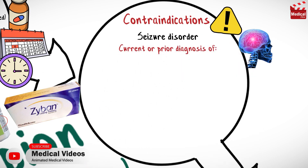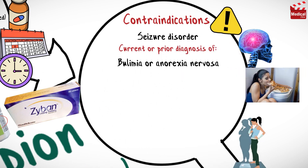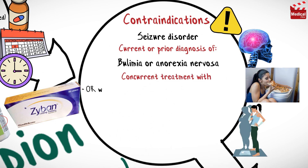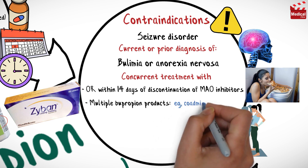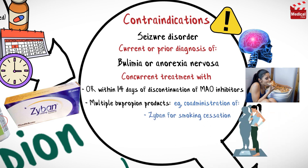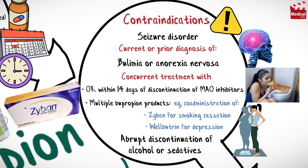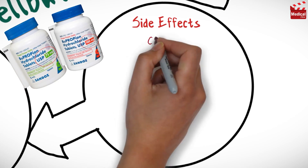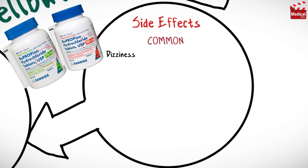Bupropion is contraindicated in cases of seizure disorder, current or prior diagnosis of bulimia or anorexia nervosa, concurrent treatment with or within 14 days of discontinuation of MAO inhibitors, concurrent treatment with multiple bupropion products such as co-administration of Zyban for smoking cessation and Wellbutrin for depression, and abrupt discontinuation of alcohol or sedatives.